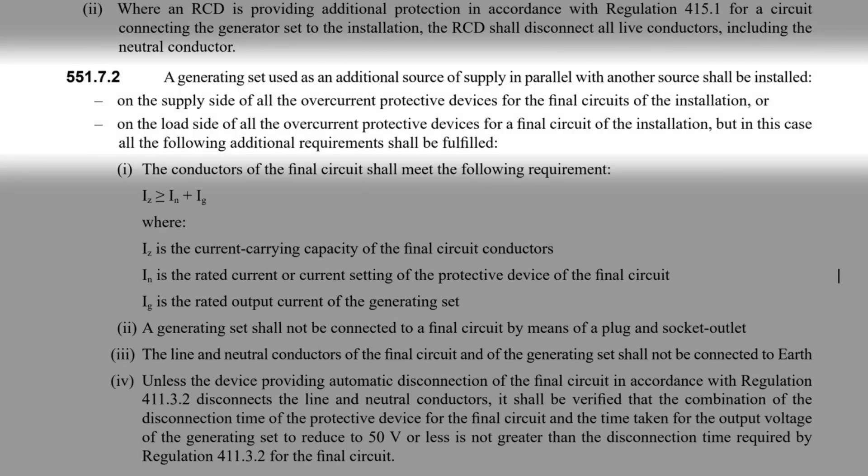The regulation states: a generating set used as an additional source of supply in parallel with another source shall be installed on the supply side of all the overcurrent protective devices for the final circuits of the installation, or on the load side of all the overcurrent protective devices for a final circuit of the installation — but in this case all the following additional requirements shall be fulfilled. So unless you're completely off grid, this regulation describes how PV systems connect into the fixed wiring system of a property.